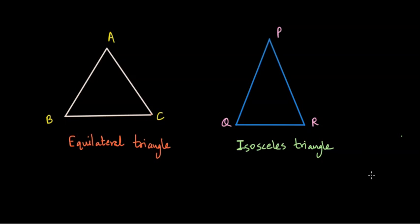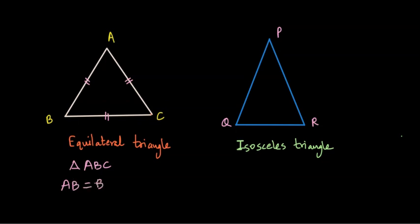Let us recall the properties of equilateral triangle and isosceles triangle. An equilateral triangle is shown on the left — triangle ABC. When we say it's an equilateral triangle, that means all the sides of the triangle are equal. They could be of any length, but all of them are equal. So AB is equal to BC is equal to AC.